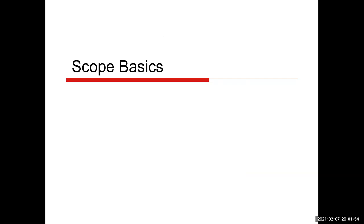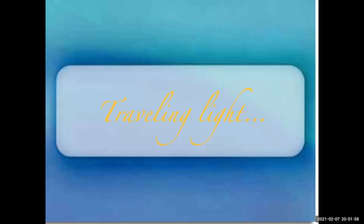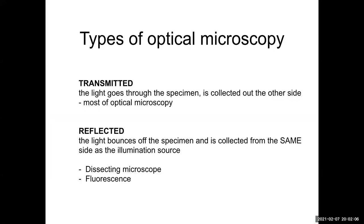Let's go into scope basics now — traveling light — because what we do is light microscopy, optical microscopy. Optical microscopy is defined in large part by the journey of the light as it goes through the microscope. There are two fundamental ways that the light can travel.